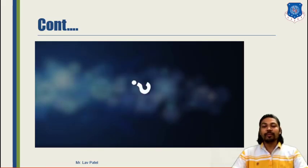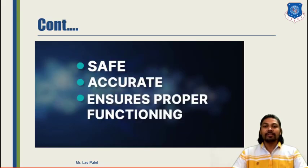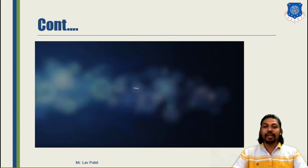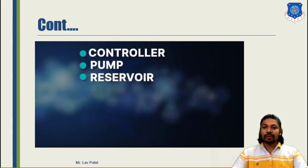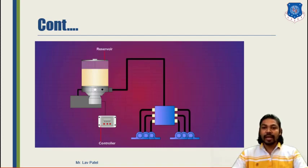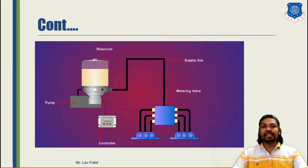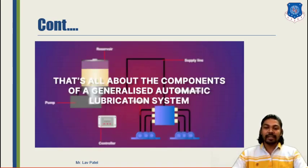It is a very precise supply of lubricant — it should be neither under-lubrication nor over-lubrication. We have several parts that need to be lubricated, so we need a system that is safe, accurate, and properly functioning. The components of this system include controllers, pump, reservoir, metering valve, supply lines, and feed lines. In the overall diagram, you will find a controller, a reserve tank, a pump mounted below the reservoir, a metering valve, and different lines through which oil is provided from one place to another.